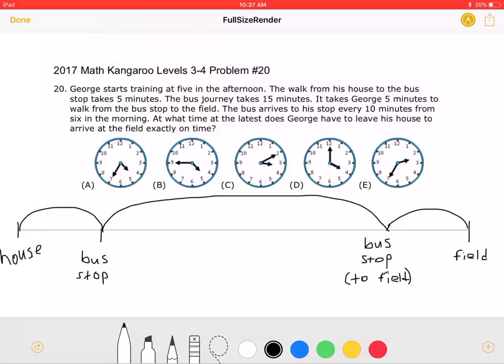The bus arrives at his stop every 10 minutes from 6 in the morning. At what time, at the latest, does George have to leave his house to arrive at the field exactly on time?